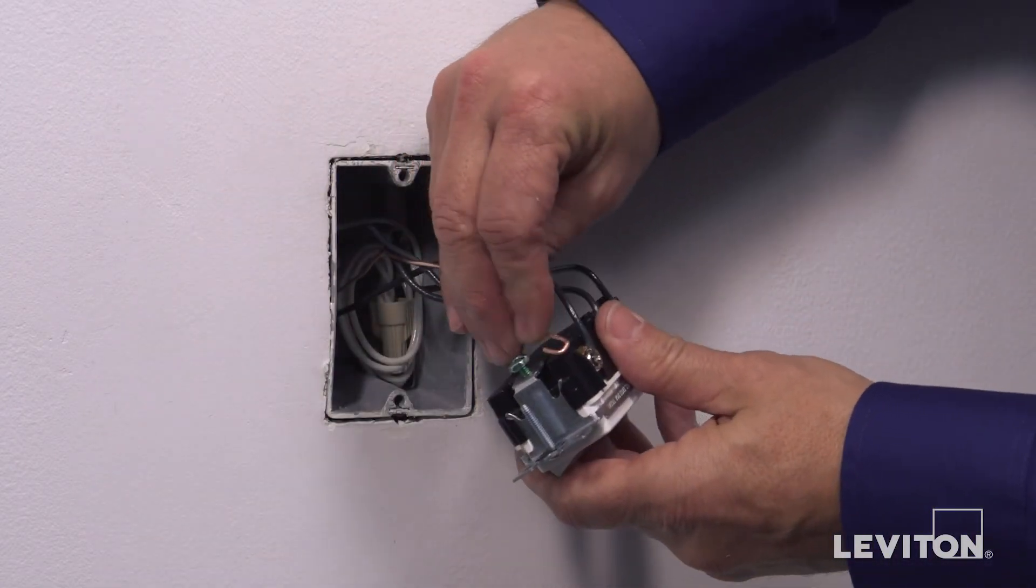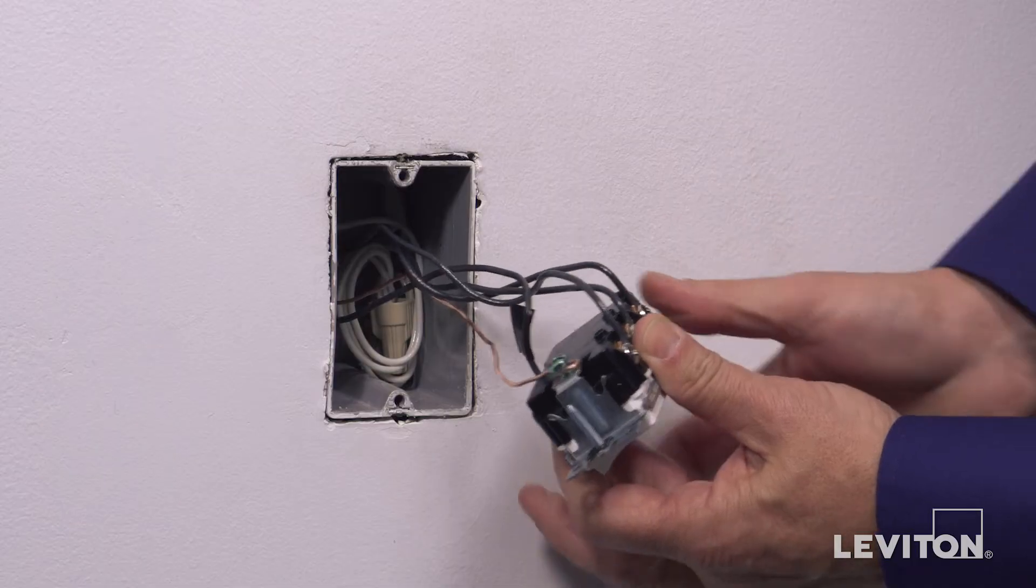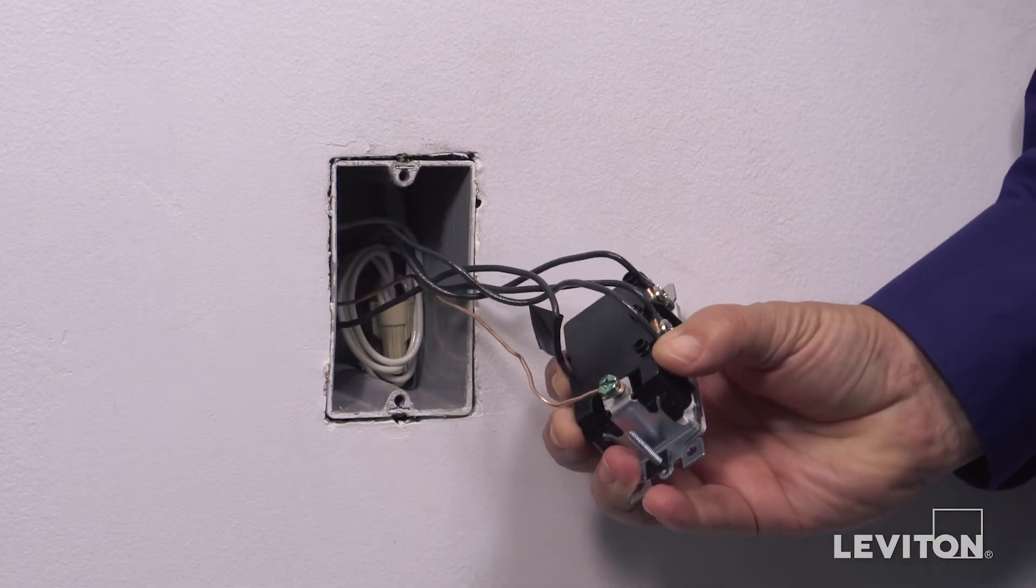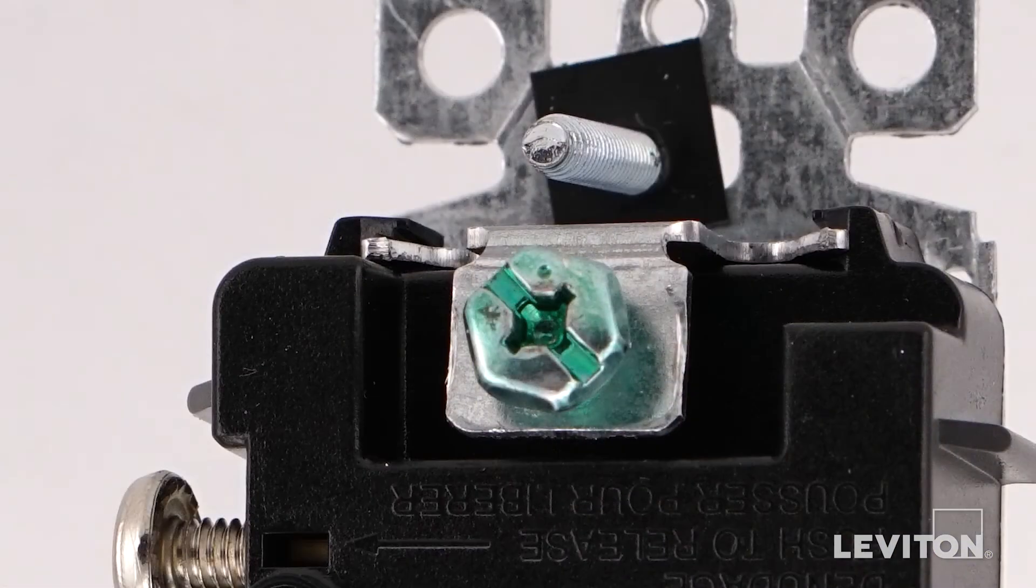Finally, loop the ground wire clockwise three-quarters of a turn around the green screw. Tighten firmly.